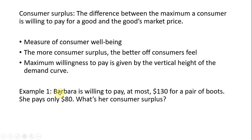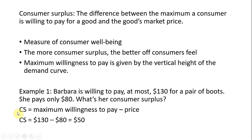Let's do a number of examples. Barbara is willing to pay at most $130 for a pair of boots. If she only pays $80, what's her consumer surplus? Consumer surplus, based on the definition, is just the maximum willingness to pay minus the price. Maximum willingness to pay is $130, she only pays $80, and the difference is consumer surplus. Barbara was willing to pay $50 more than she actually did for this pair of boots.